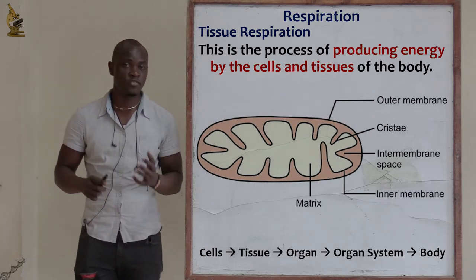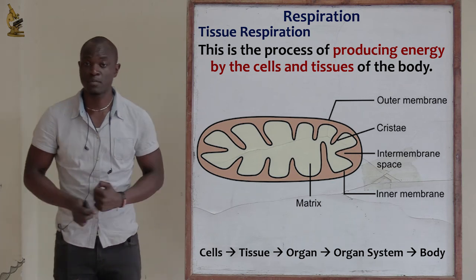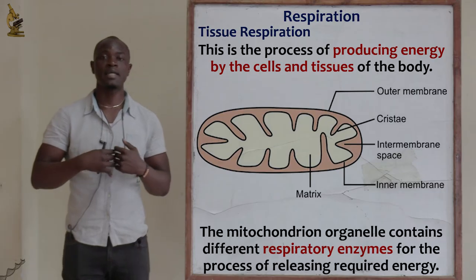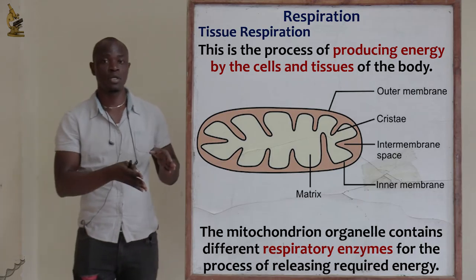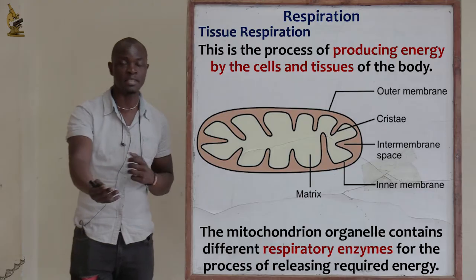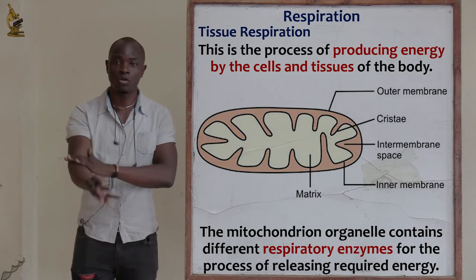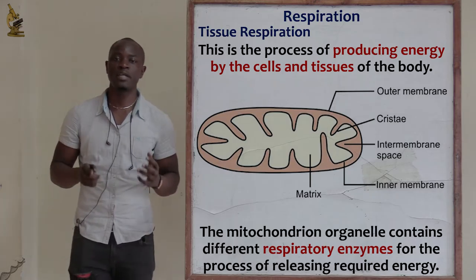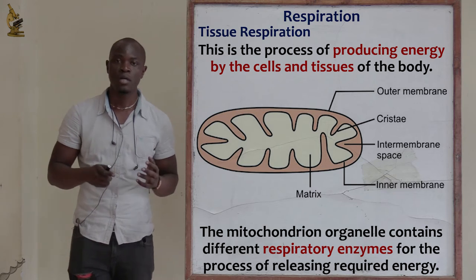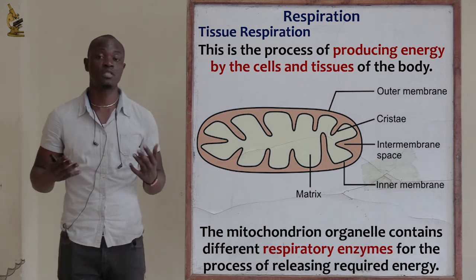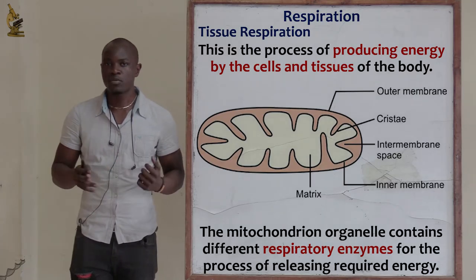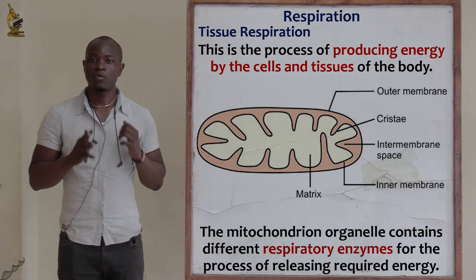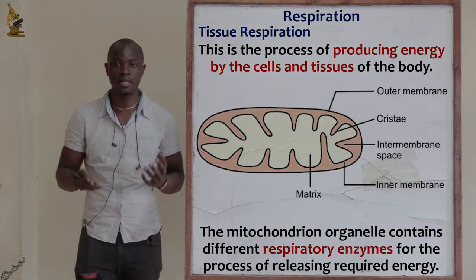The main respiratory organelle in every cell is the mitochondrion. The mitochondrion is found in all living cells, and its function is to provide energy for the cell. That energy is then taken to all cells of the body, which give the organism energy — for example, to move a hand, to walk, and to carry out daily activities. Every living cell requires energy, and that's why every living cell has a mitochondrion for producing that energy.